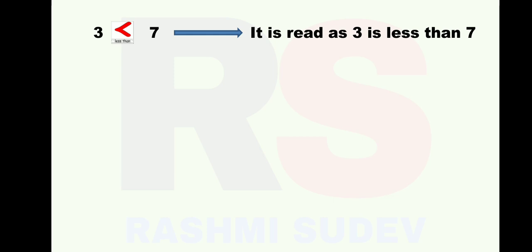To compare numbers, you need to learn and understand the difference between the less than sign and the greater than sign. When you look at the video, you can see names written below the sign to help you identify them. Next example: 1 and 9. 1 is the smaller number, 9 is the bigger number - so which sign will be used here? Less than sign.